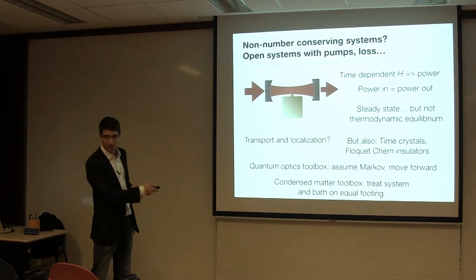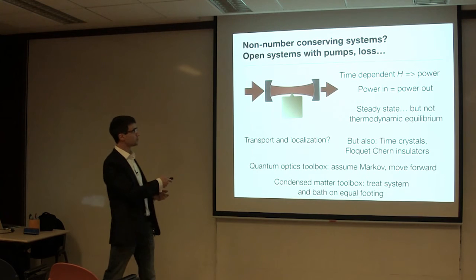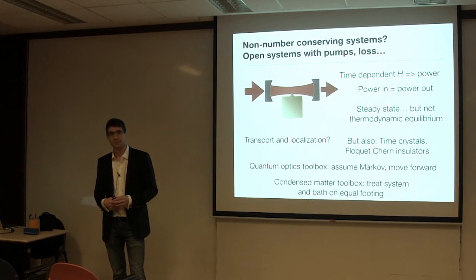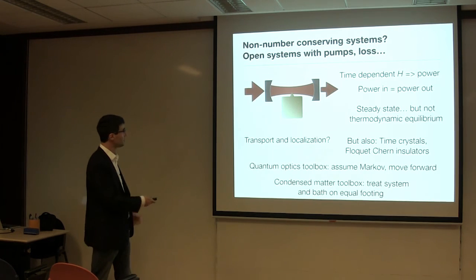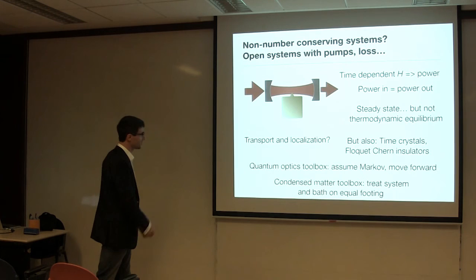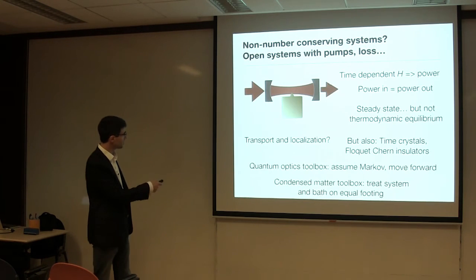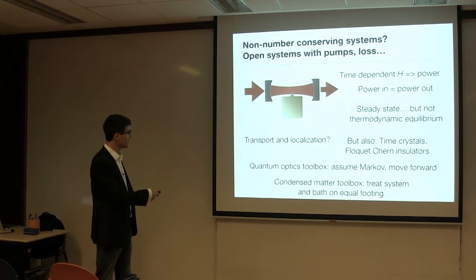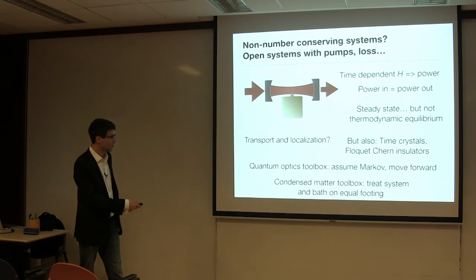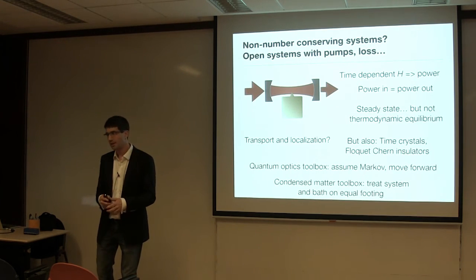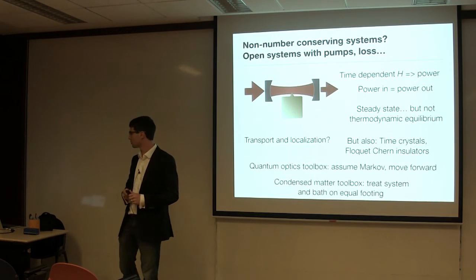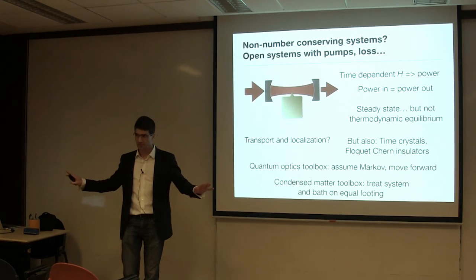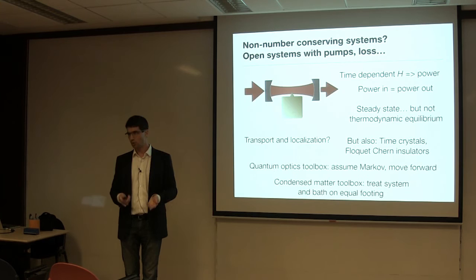And this, under the eigenstate thermalization hypothesis, which is not always valid, many body localization breaks this. But for many systems, this leads to a thermal description of the problem. The point here is that the underlying system at energy conservation. But if we look at a subsystem, the subsystem is described as a mixed state. The energy conservation corresponds to a thermodynamic potential beta, which is one over the temperature. If you have other conserved quantities, like particle number, you get other thermodynamic potentials, like a chemical potential. Photons don't have it. That's why their ground states are vacuumed.